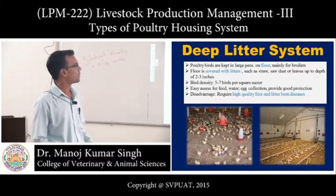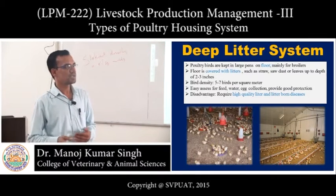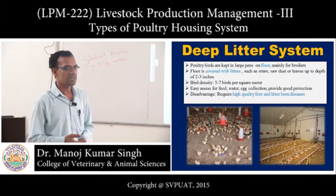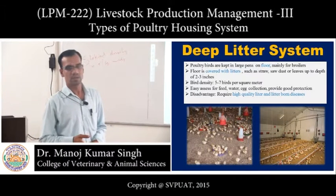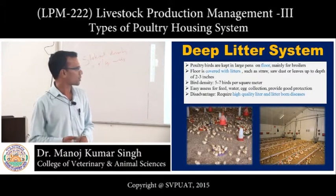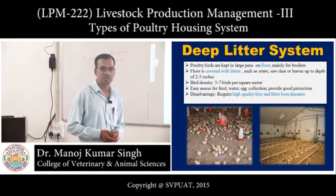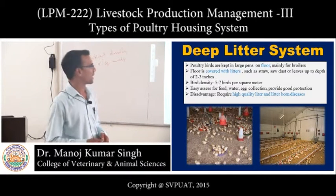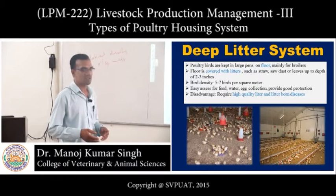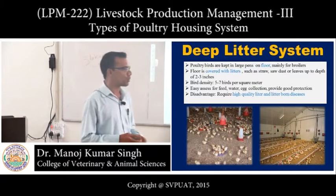The next is the deep litter system. Poultry birds are kept in large pens on floors using litter material such as wood shavings, straw, or sawdust. Bird density is 5 to 7 birds per square meter. Easy access to feed, water, and egg collection provides good protection.